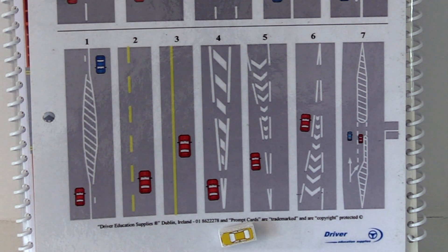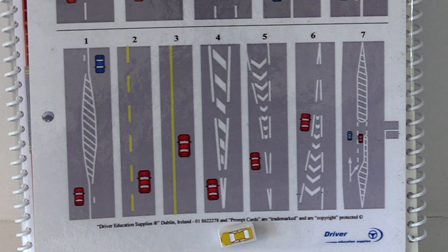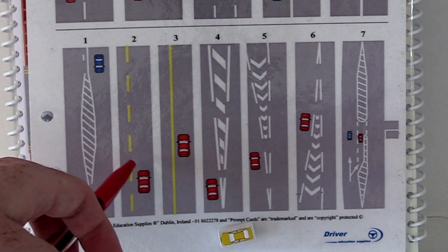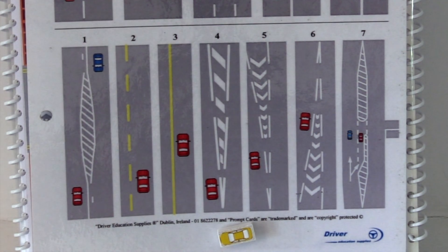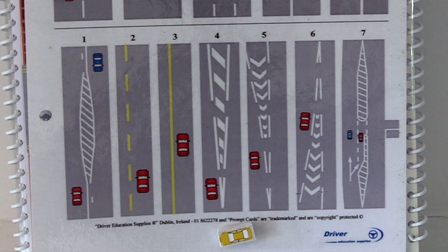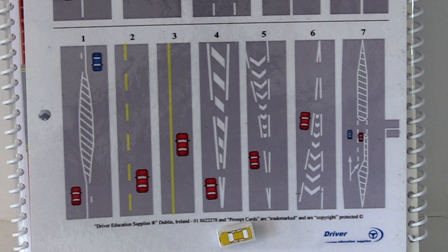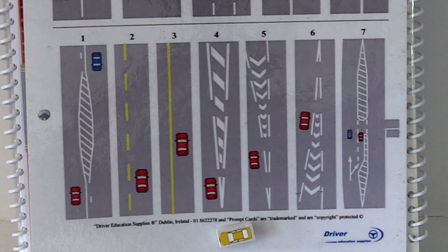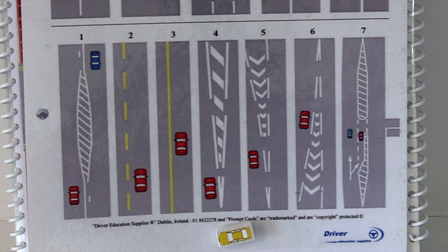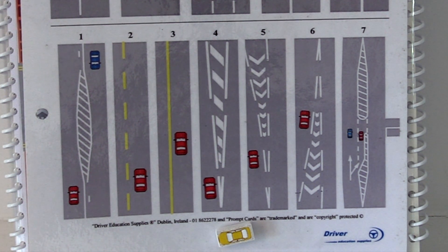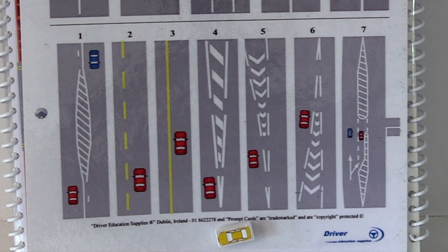The broken yellow line on the left indicates the hard shoulder or edge of the road. On the hard shoulder, if it's a broken yellow line, it's generally used by pedestrians and cyclists. Cars can come in there to let faster vehicles overtake, but only if it's safe and only if they can see clearly a long distance ahead.